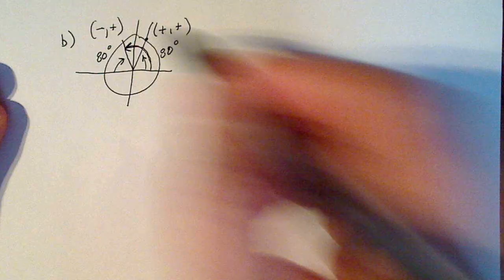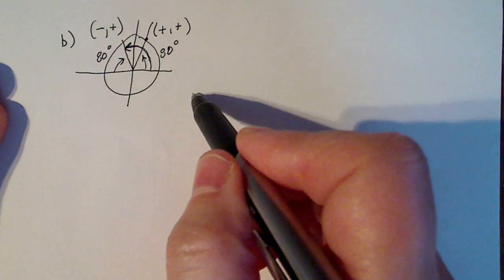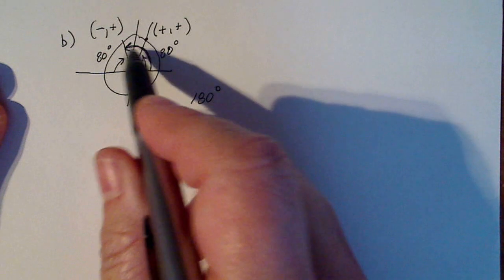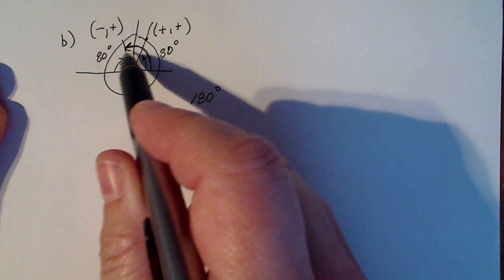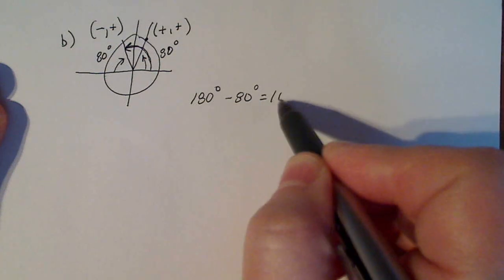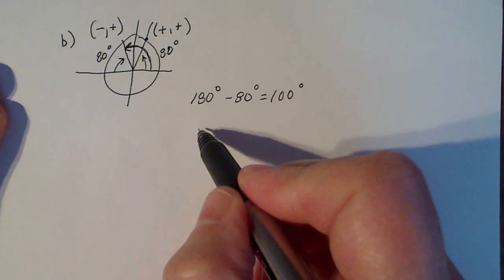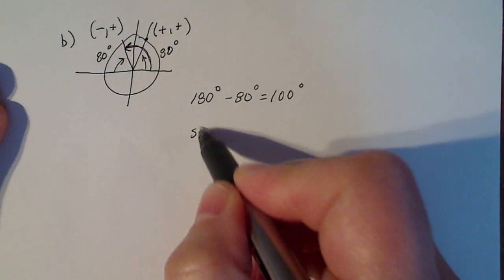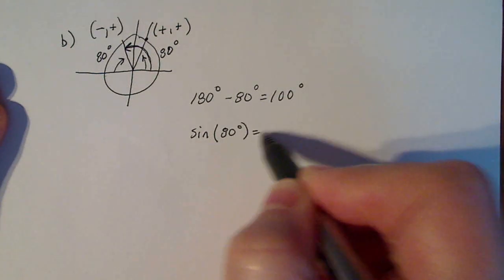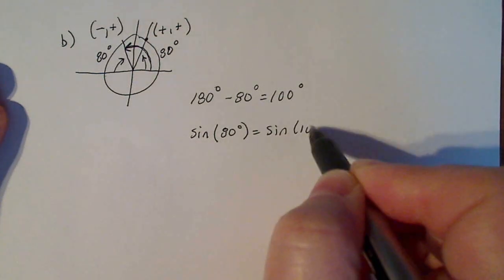So that angle right there is going to be 180 degrees, which is this whole rotation going back 80 degrees. So minus 80 degrees, which leaves me with 100 degrees. So I would say then that the sine of 80 degrees is the same as sine of 100 degrees.